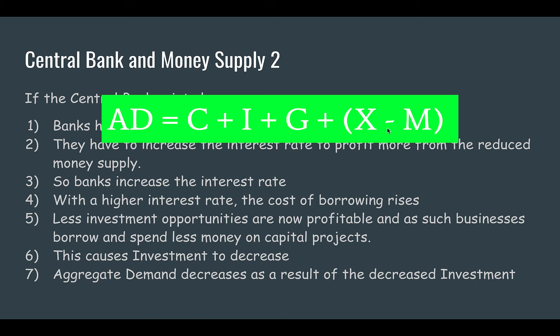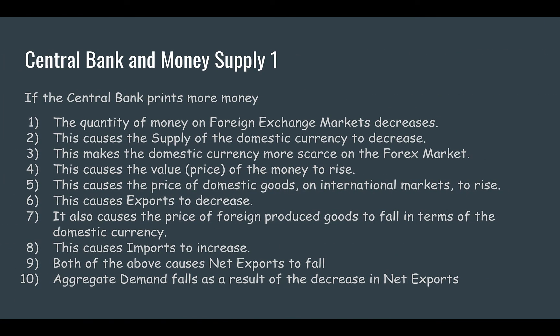Is there another element of the aggregate demand equation that is going to be affected by the increase in interest rates? Yes — it's net exports. If the central bank reduces the money supply, the quantity of domestic currency on foreign exchange markets decreases. This causes the supply of domestic currency on those foreign exchange or forex markets to decrease. Therefore, this makes the domestic currency more scarce on that forex market. When there is a reduction in the supply of anything, the value — or in this case the price — rises. So this reduction of domestic currency has caused the currency to rise in value.